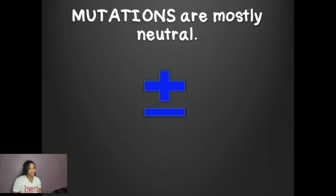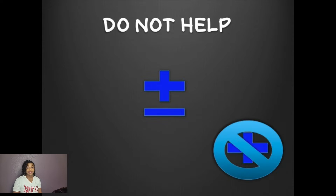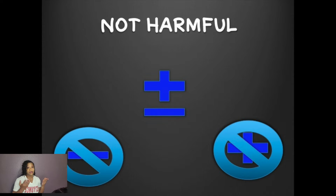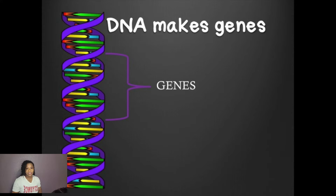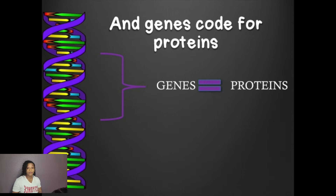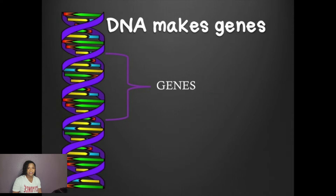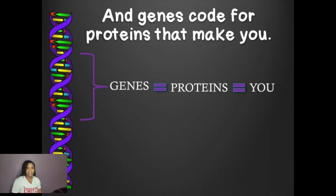Mutations are mostly neutral, meaning they do not help and they're not harmful. DNA makes genes and genes code for proteins that make you.